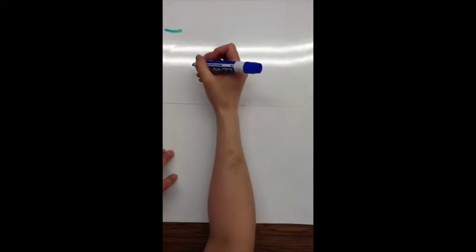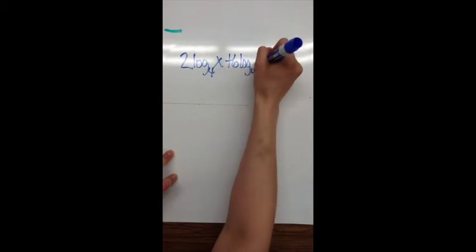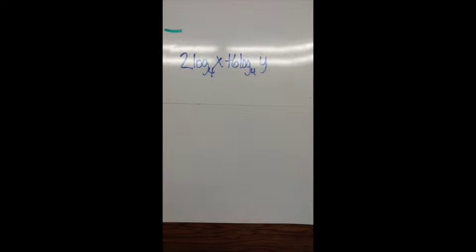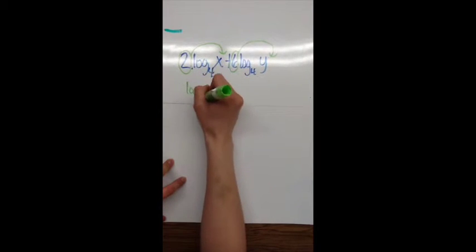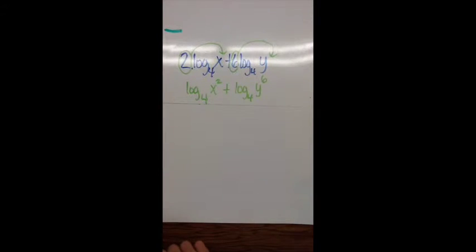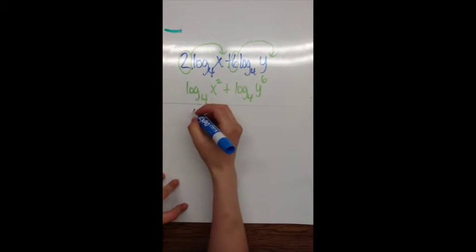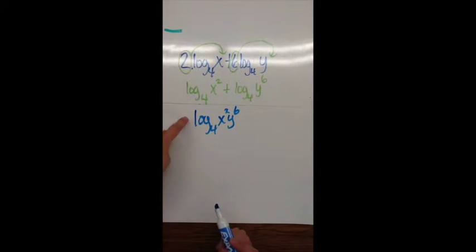If I have 2 log base 4 of x plus 6 log base 4 of y, because the 2 and the 6 are being multiplied in front of the logs, I'm going to move both of those to a power with the arguments. So I have log base 4 of x squared plus log base 4 of y to the 6th. Because I'm adding, I'm going to write this as one log and multiply in between the two arguments — log base 4 of x squared y to the 6th. There's only one log and nothing out in front, so I'm done condensing.